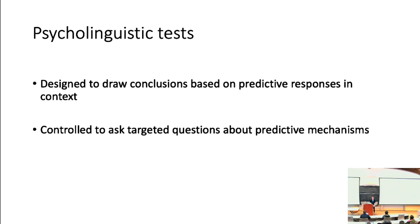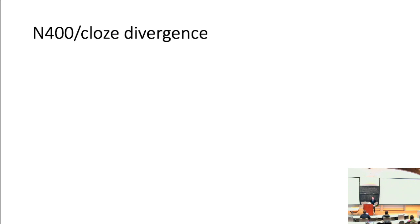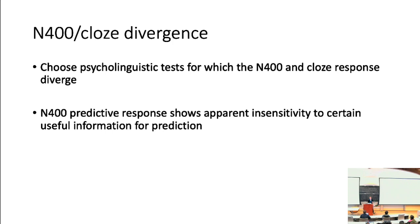We specifically focus on tests showing an N400/cloze divergence — psycholinguistic experiments where the N400 predictive response shows apparent insensitivity to certain information that is useful for prediction and is used when people do the cloze task. These are cases where there's particular information the N400 is insensitive to; we can see whether BERT shows similar insensitivities. We adapt three different psycholinguistic datasets, two already mentioned and one new. Within each, we apply three tests: word prediction accuracy, sensitivity tests comparing probabilities assigned to different words, and qualitative analysis of BERT's top predictions.